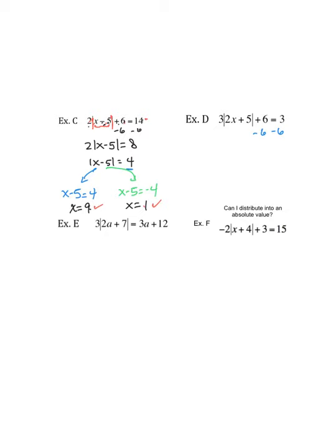Ladies and gentlemen, I would subtract 6 from both sides. 3 times the absolute value of 2x plus 5 equals negative 3. Divide both sides by 3.